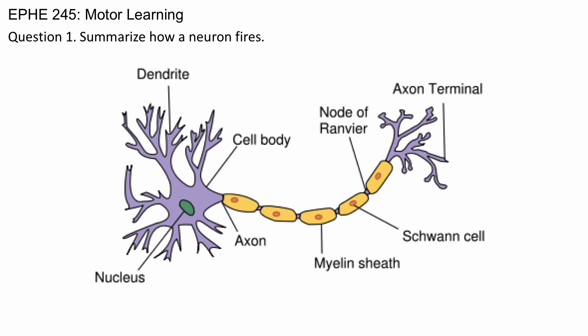The dendrites are typically attached to the cell body, which is then connected to the axon. The axon is how the neuron communicates.